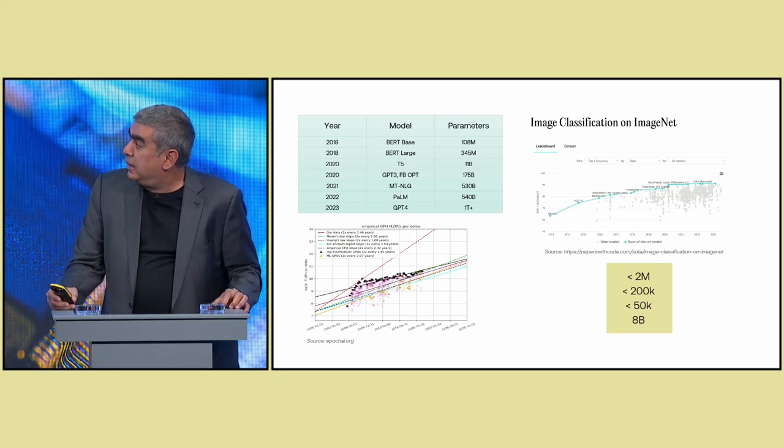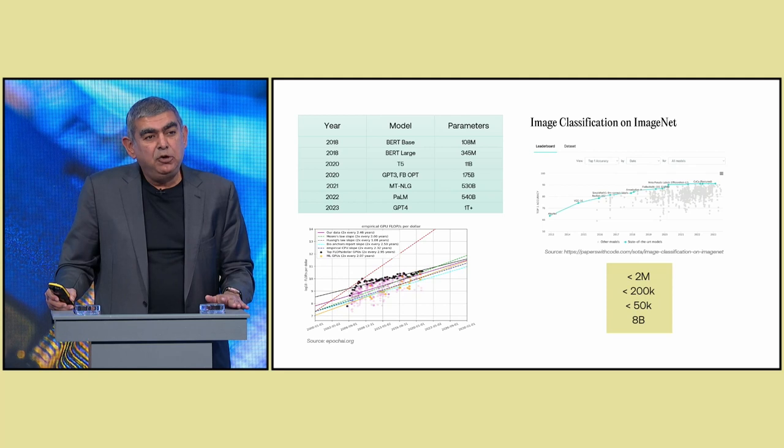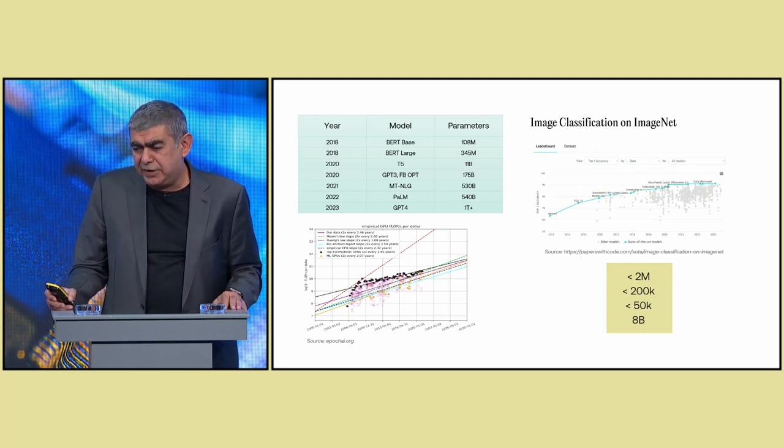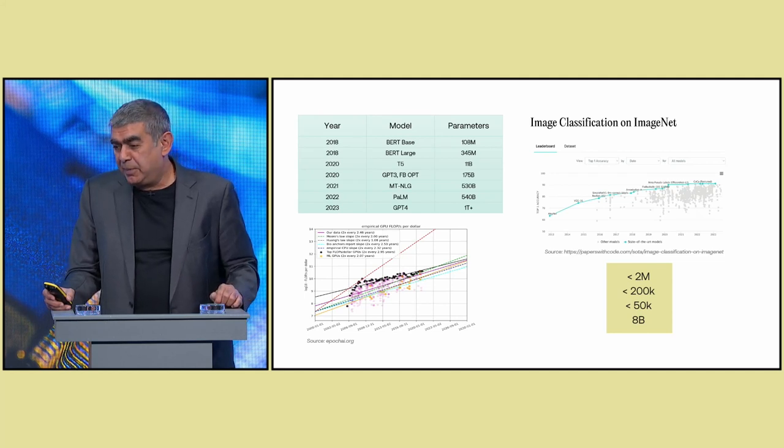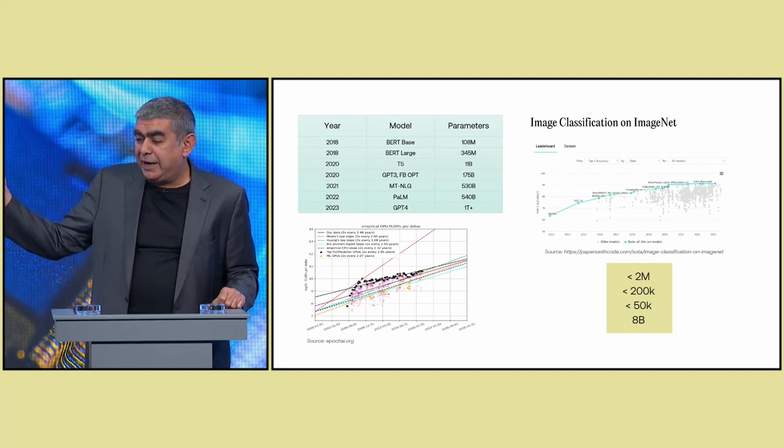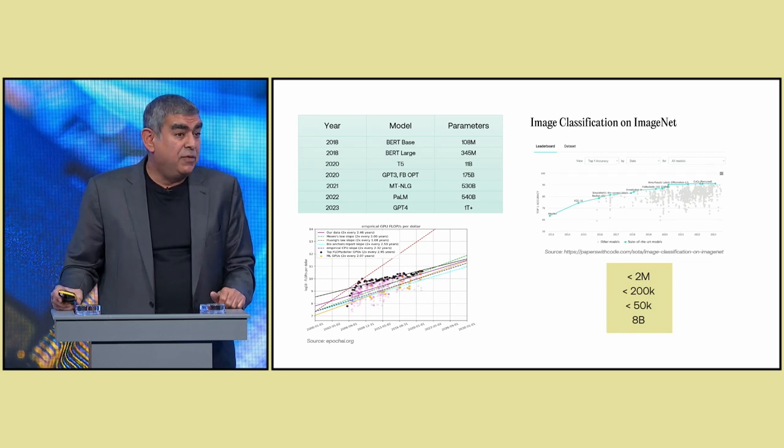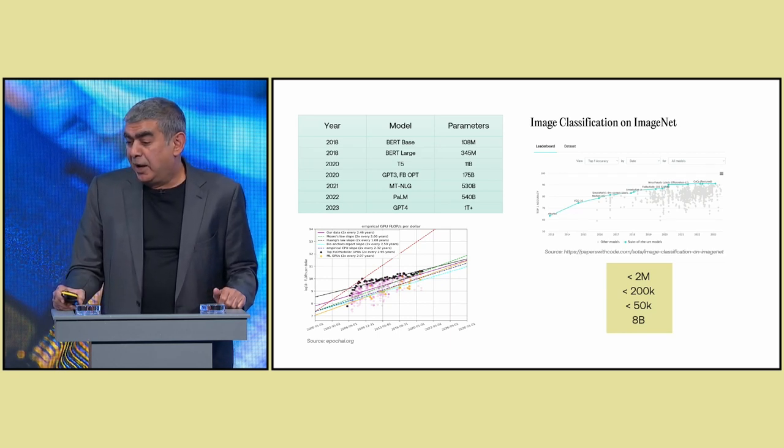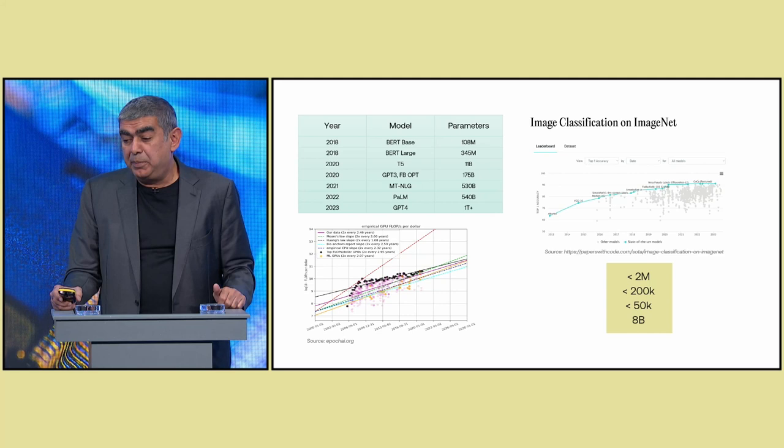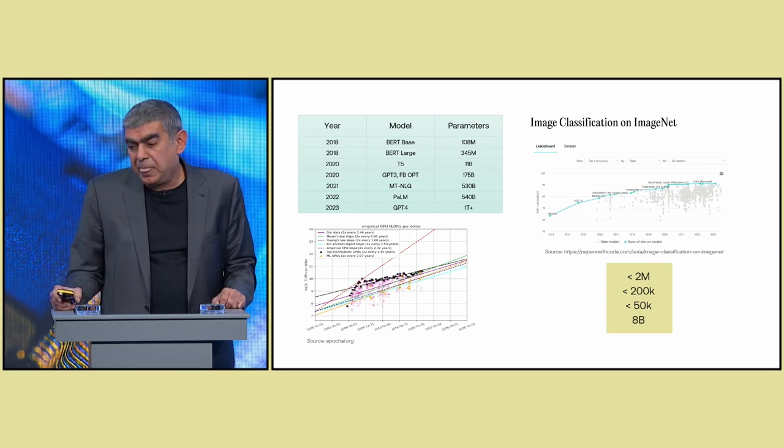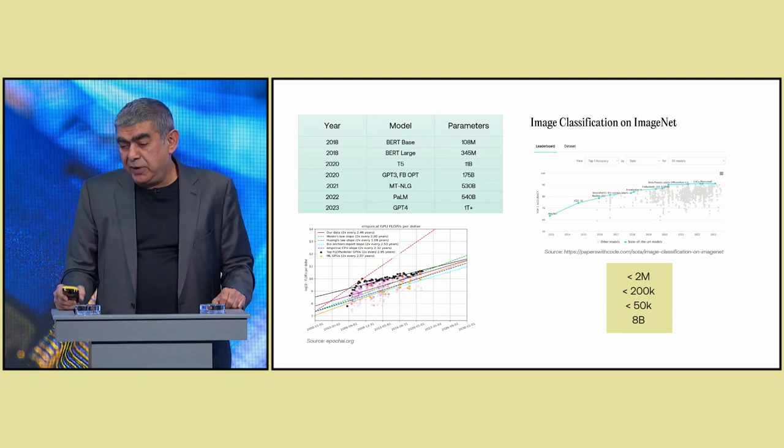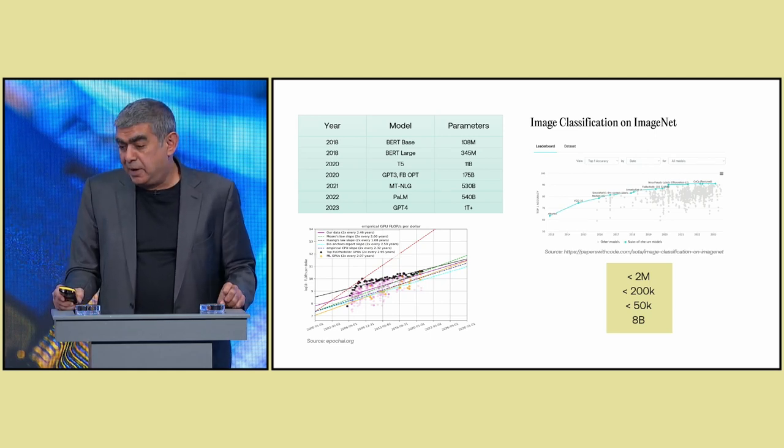This whole revolution that led to ChatGPT started about five years ago. A system called BERT was built based on transformer technology coming out of Google. It had 108 million parameters, which at the time was thought to be insanely large. Very quickly, people realized that the bigger you make these networks, the more powerful they seem to get. And as you see, today we have a trillion plus parameter networks.